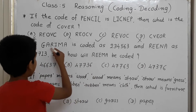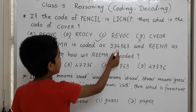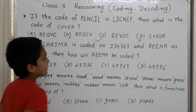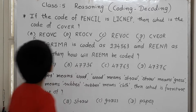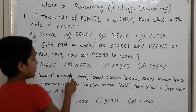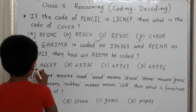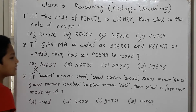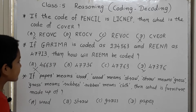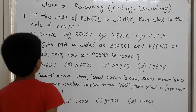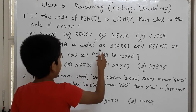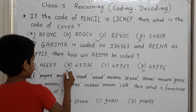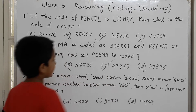R is in the third position, so first, second and third — first will be 4. All options with 4 qualify. Then there's a double E, so double 7: giving 4-7-7. Two options remain. Now checking M — M is the second-to-last letter in Garima, coded as 6. One option has 3 instead of 6, so this is our right answer.